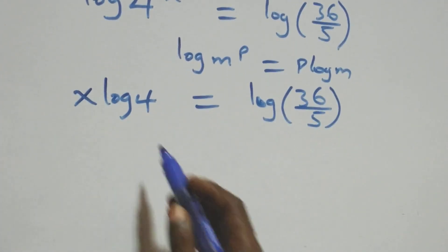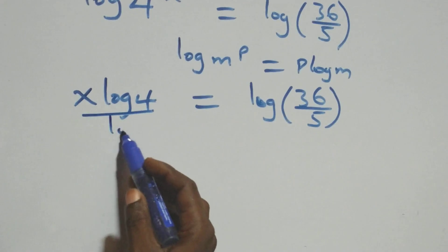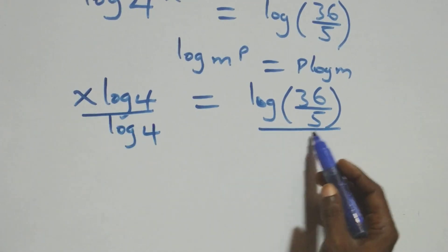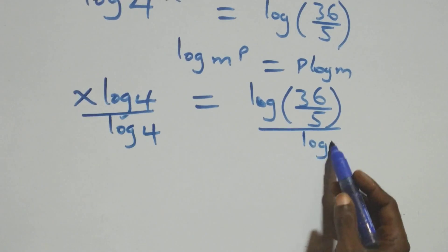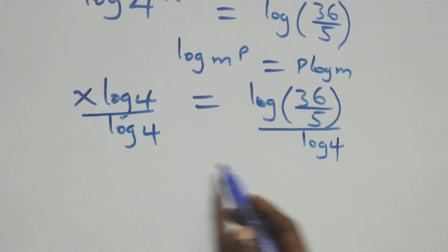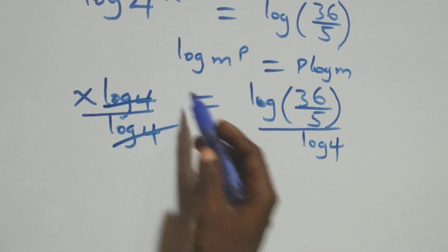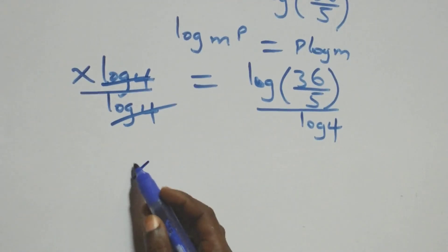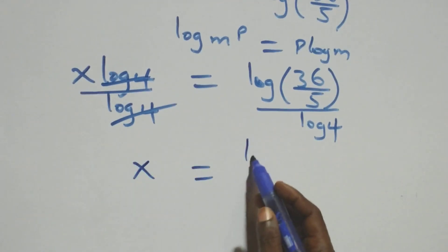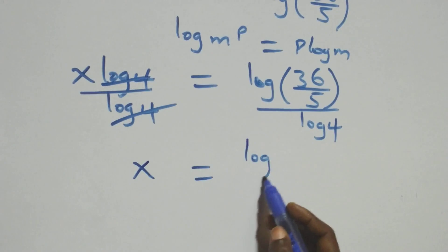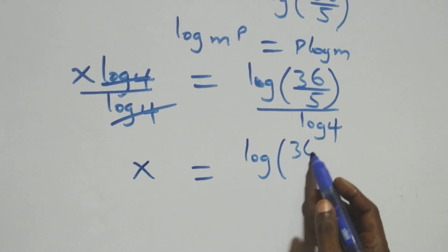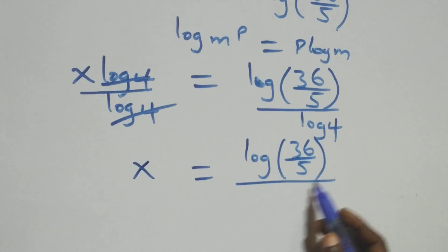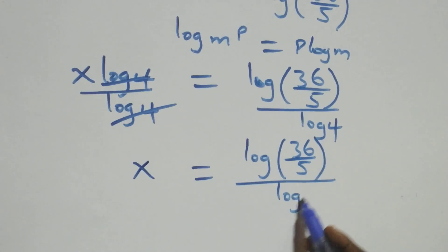Next step: we divide both sides by log 4. Log 4 cancels each other, and we are left with x equals log(36/5) divided by log 4.